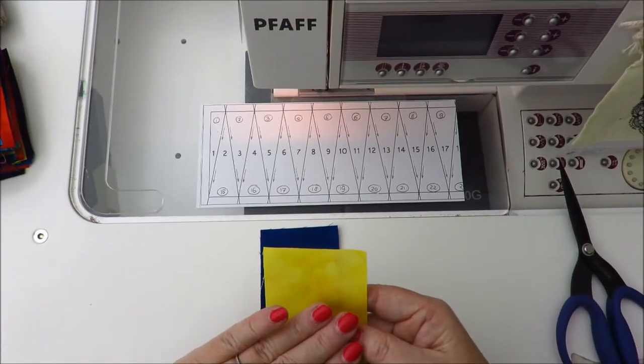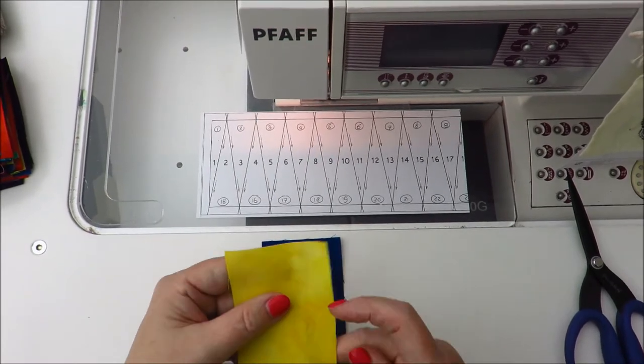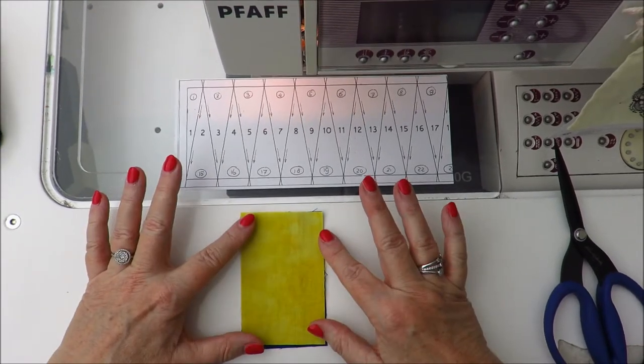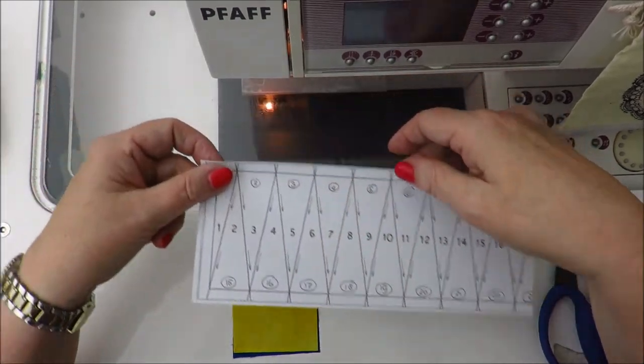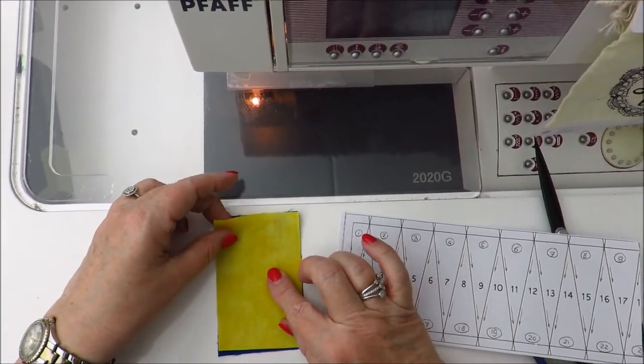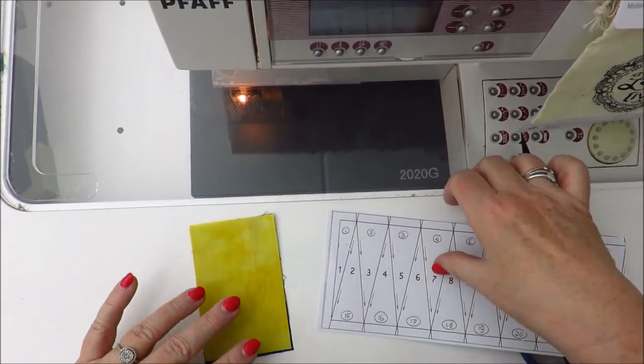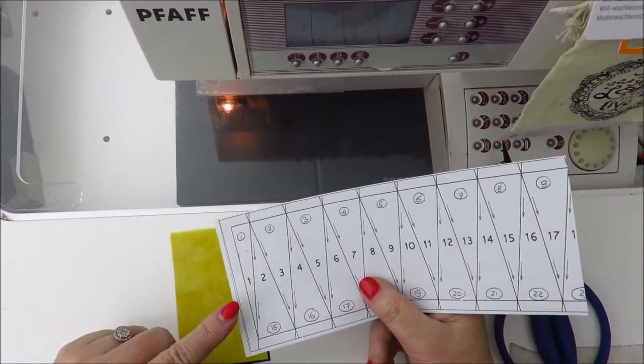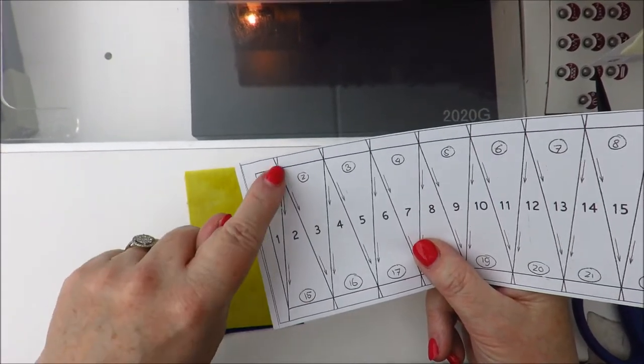I take the pile and my first two fabrics. Always remember, the first fabric for the first foundation point is always on top. Place the pieces exactly on top of each other, right sides facing together. Take your template and the only thing you have to do is focus on the line between one and two.